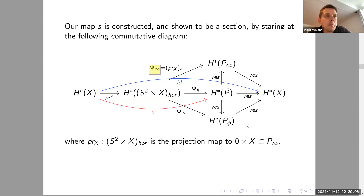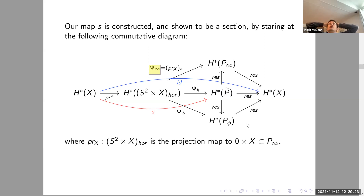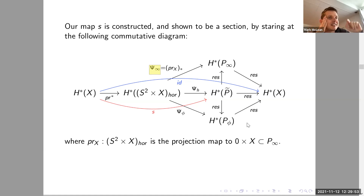Audience question: Is this the same setup as McDuff's proof in the rational case? Response: McDuff defines a sort of cycle map and shows that replacing P with the inverse gives an inverse via some gluing argument. She uses the same fibration S. We tried to extract the minimal amount needed to get this result, whereas McDuff was setting up a formalism and was interested in other things as well.